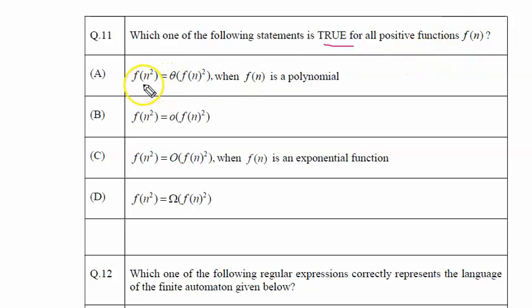We are given four options and we have to tell which one of them is true. So let us say that for polynomial function, f of n is equal to 2 multiply by n. 2n is the f(n) function.